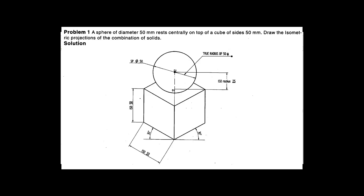Today we'll start with the first problem in isometric projection, which we already discussed in class. Isometric projection means you have to incline the object at an angle of 30 degrees. The problem states: a sphere of diameter 50 mm rests centrally on the top of a cube with sides 50 mm. We need to draw the isometric projection of this combination of solids.